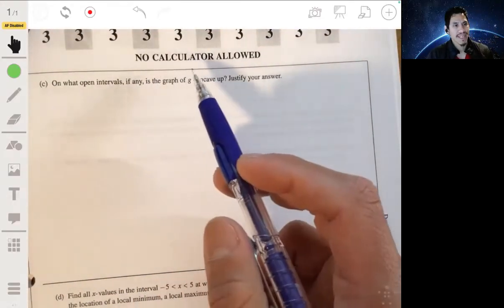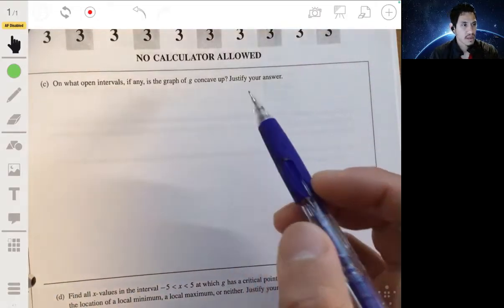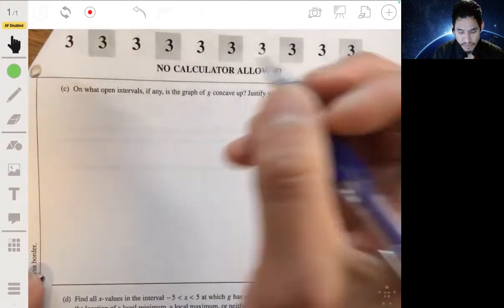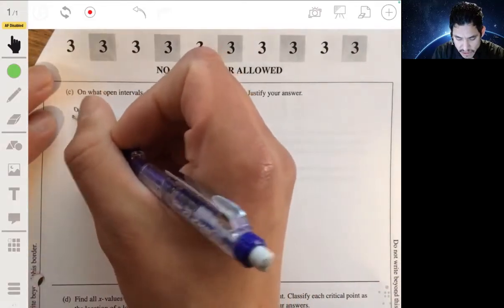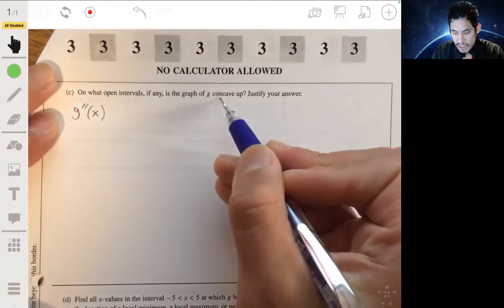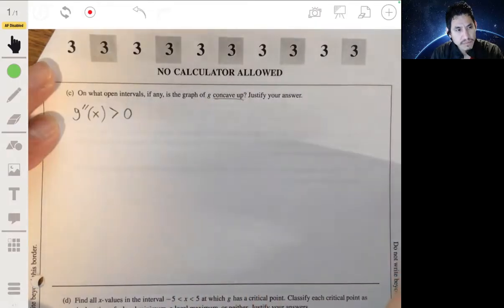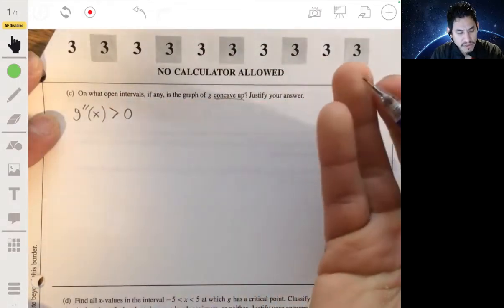Part C. On what open intervals, if any, is the graph of g concave up? Justify your answer. Okay, remember concavity? You want to study the second derivative. So we want to study the second derivative of g. And if we're saying concave up, that's when the second derivative is positive. So we want to find when the second derivative is positive.